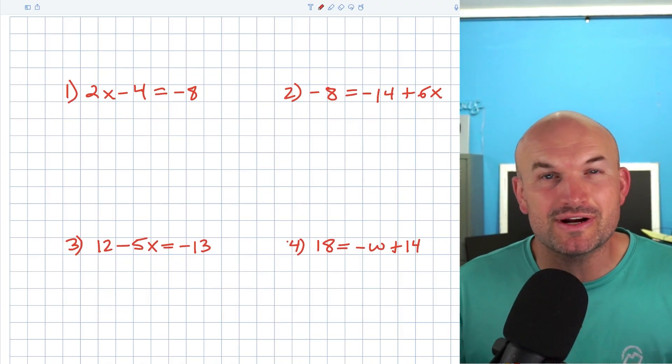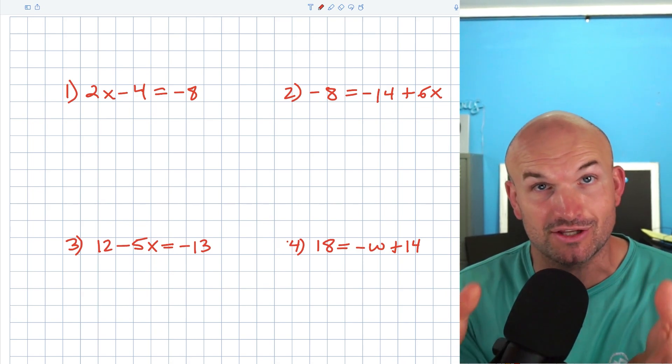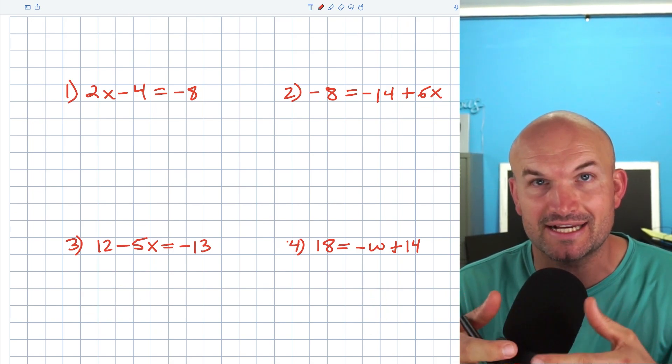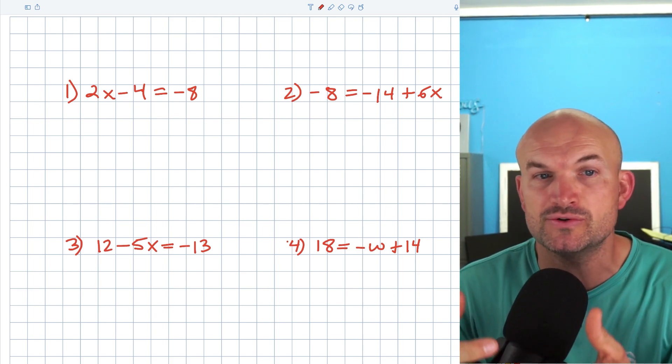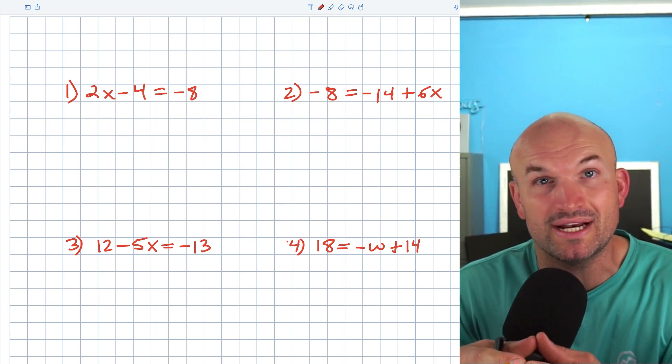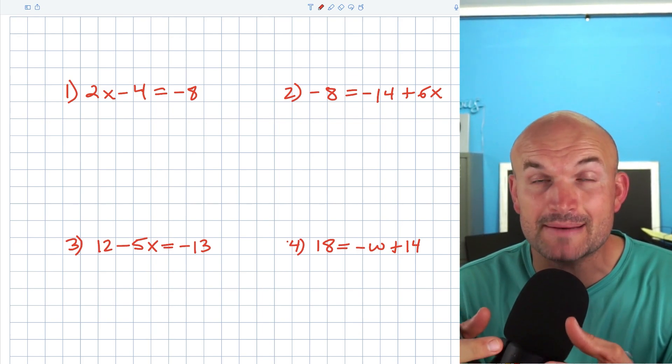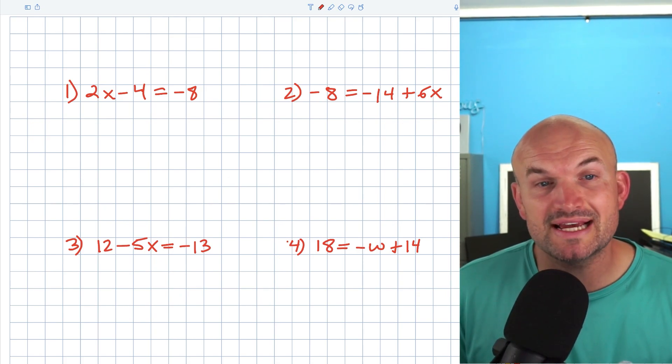Solving two-step equations is pretty straightforward once you get the hang of it. However, students still make mistakes time and time again. So what I want to do in this video is look at these four examples and diagnose the common mistakes that I see students making when solving two-step equations. They mostly can be avoided by using some tips. So what are these common mistakes and what tips can we use to avoid them?